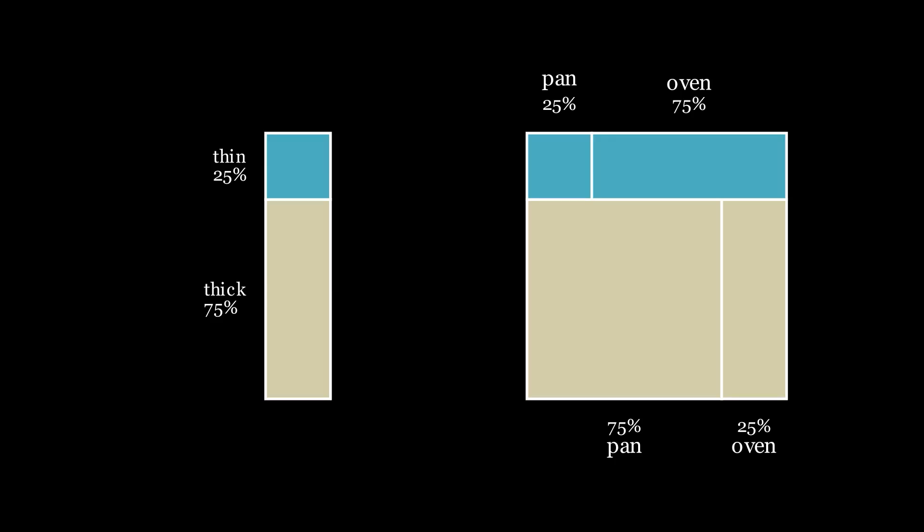Let's assume that when I do cook a thin crust pizza I use the pan 25% of the time and the oven 75% of the time. Similarly for the thick crust pizza I use the pan 75% of the time and the oven the other 25%.